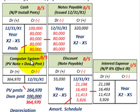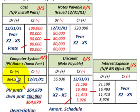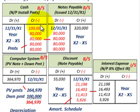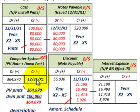On the asset side, we capitalize the computer system by debiting it for $364,970 — the present value of the notes plus the down payment. Our debits — the computer capitalization plus the discount on notes payable — balance with the credits of $320,000 notes payable and $100,000 cash. That takes care of recording the entry at the issuance of the note.